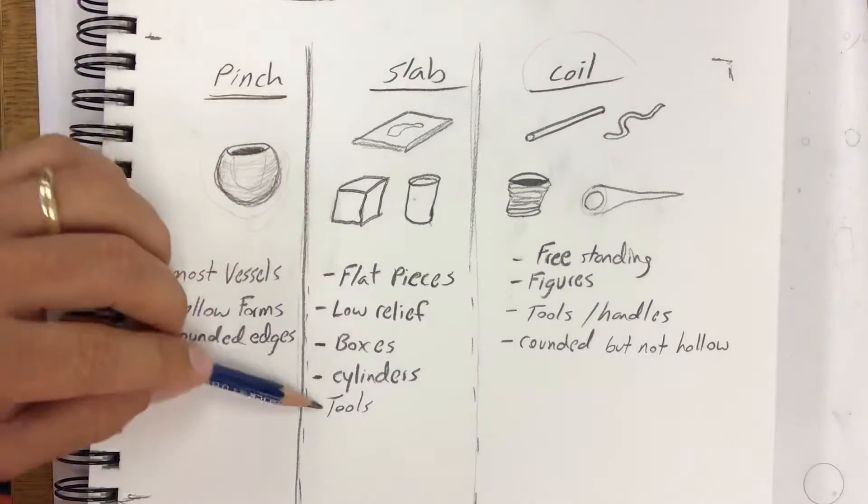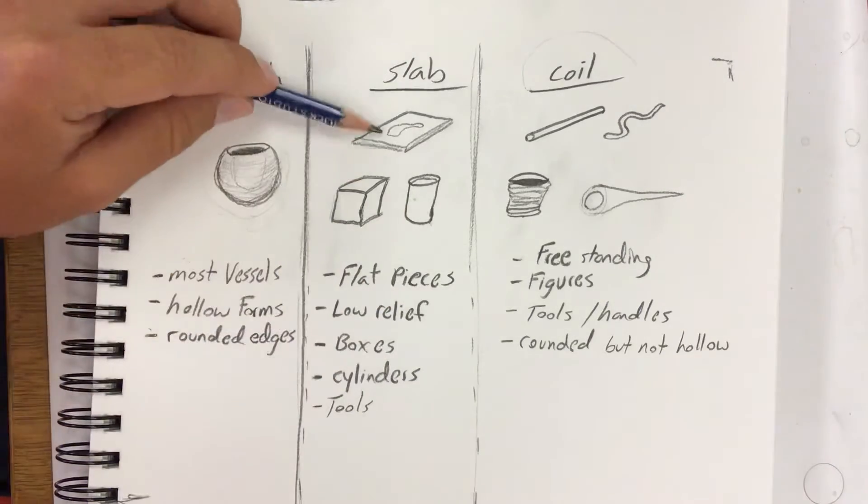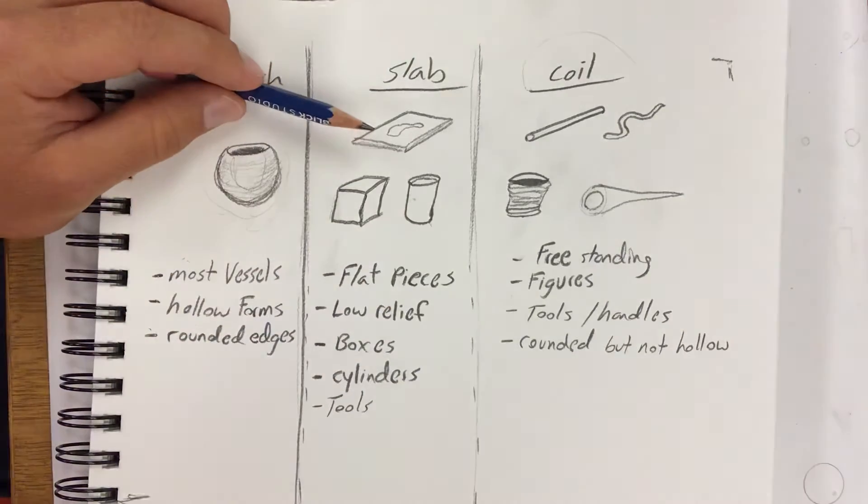Boxes, cylinders, but also tools. If you're doing a long skinny tool, you could also support it by putting a slab behind it. That way it would be less likely to break.